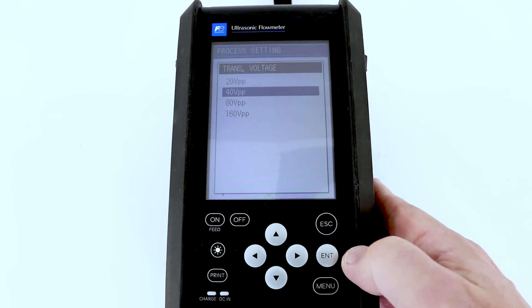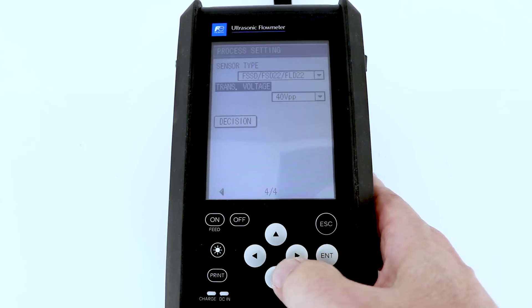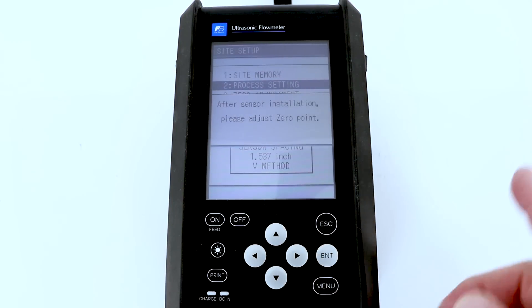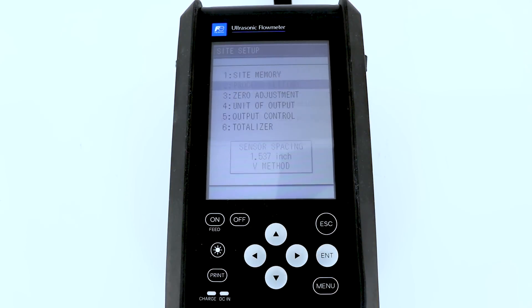After that, we hit the decision button and the decision button will tell us the spacing. Now, do not adjust the zero on your flow meter for almost all applications. It's a default for the people in the laboratory with the white coats. You really can't get a good zero in the field. The auto zero for the flow meter is just fine for almost all applications. So do not adjust the zero, but you do see the sensor spacing on the bottom. In this case, for our two-inch application, carbon steel pipe, the sensor spacing is 1.537 inches using the V method.